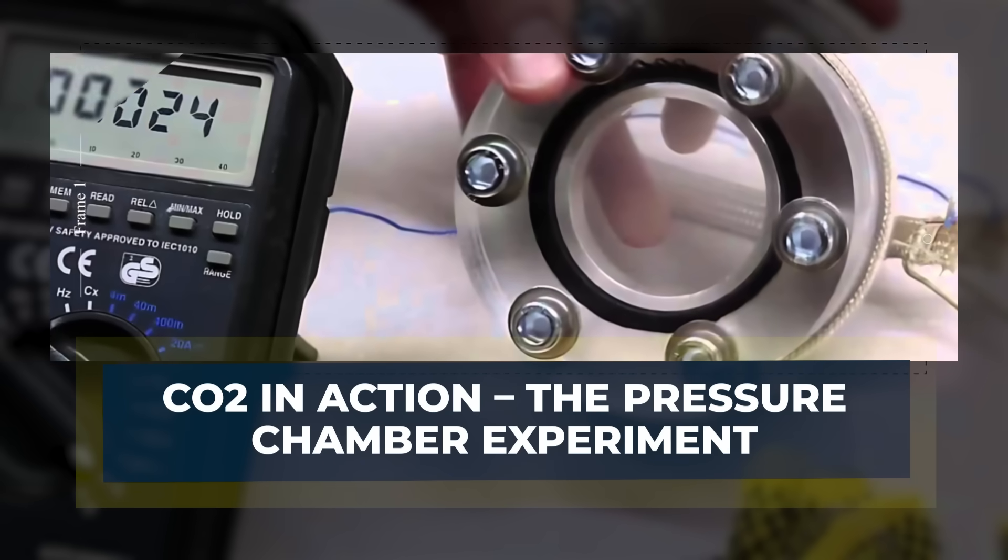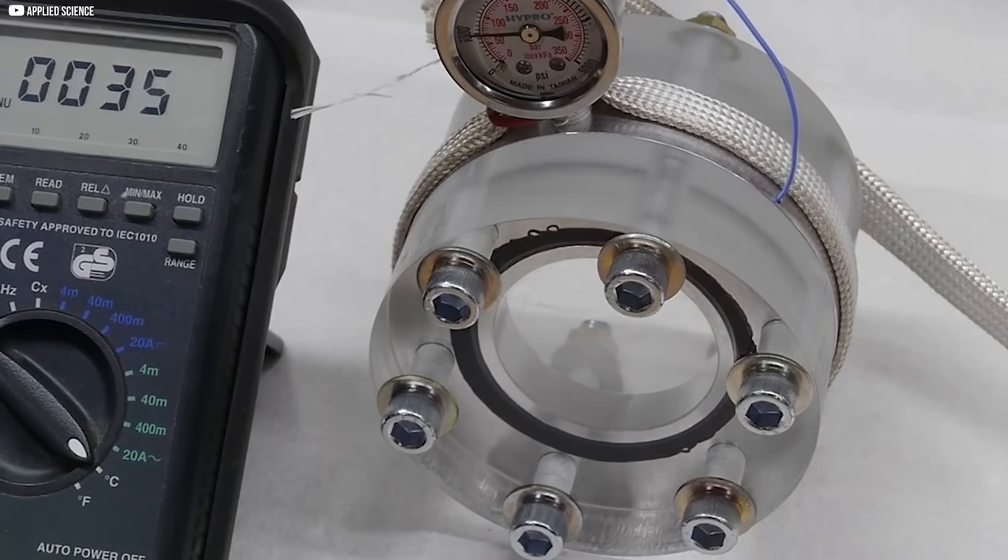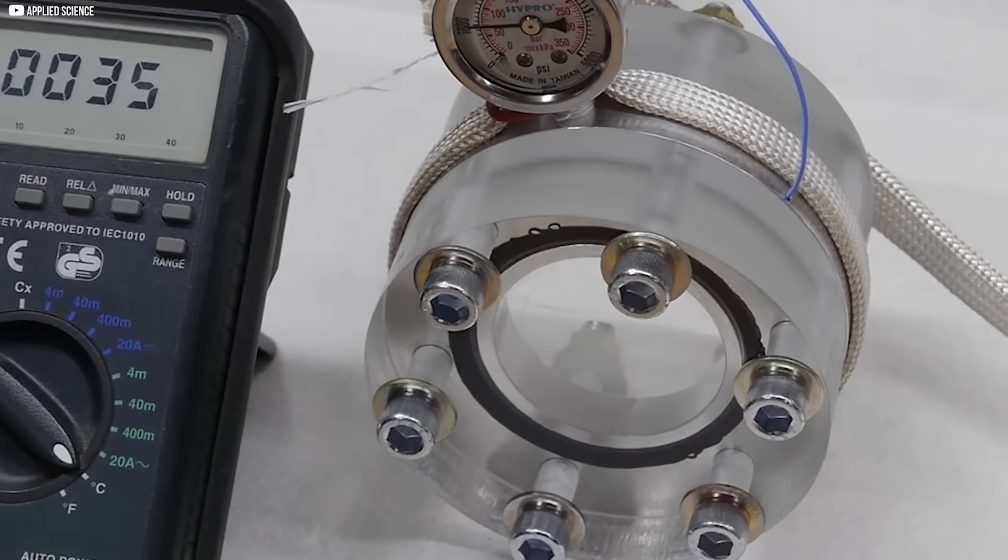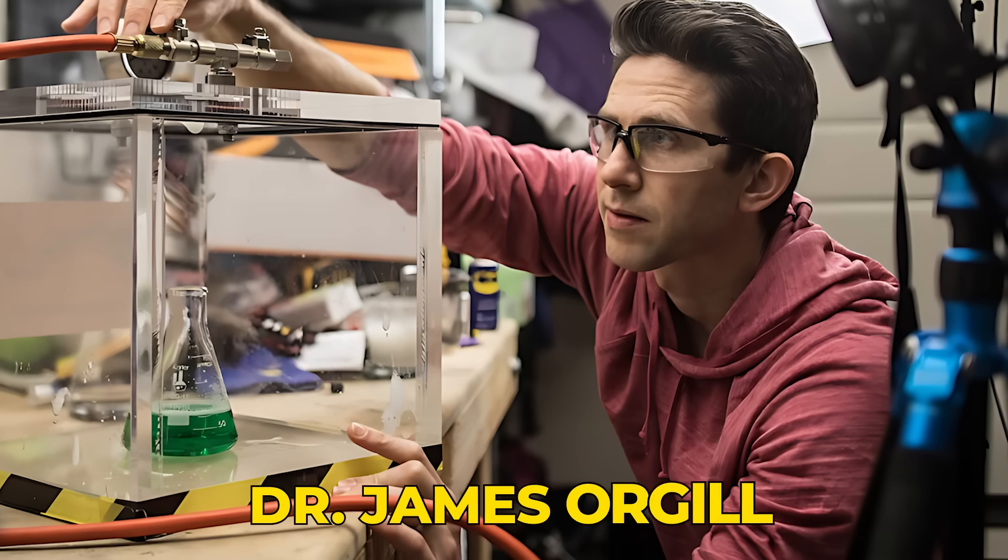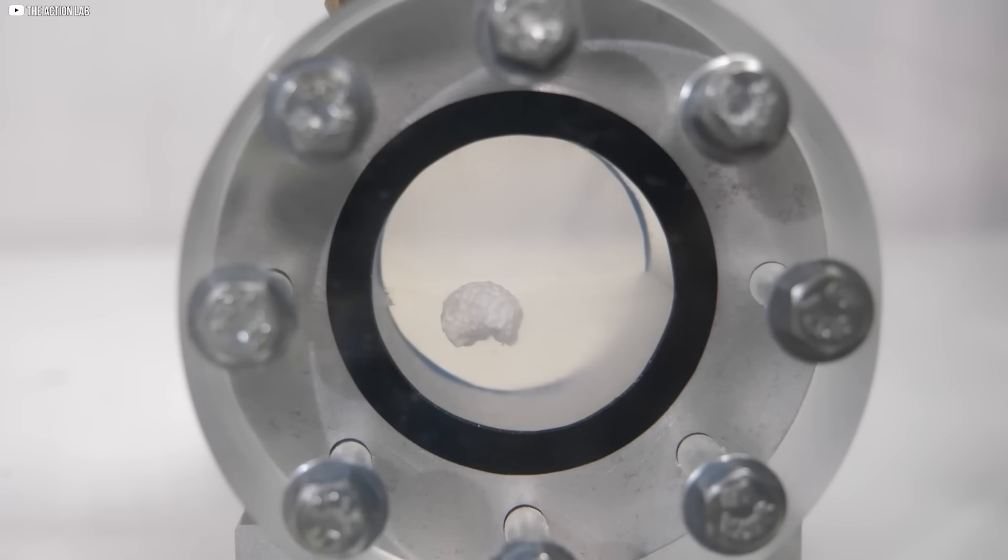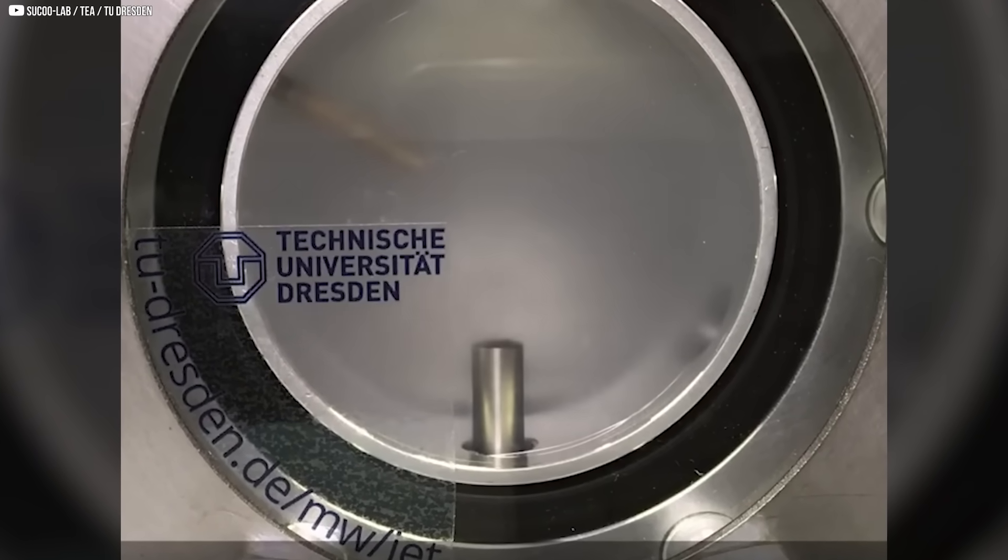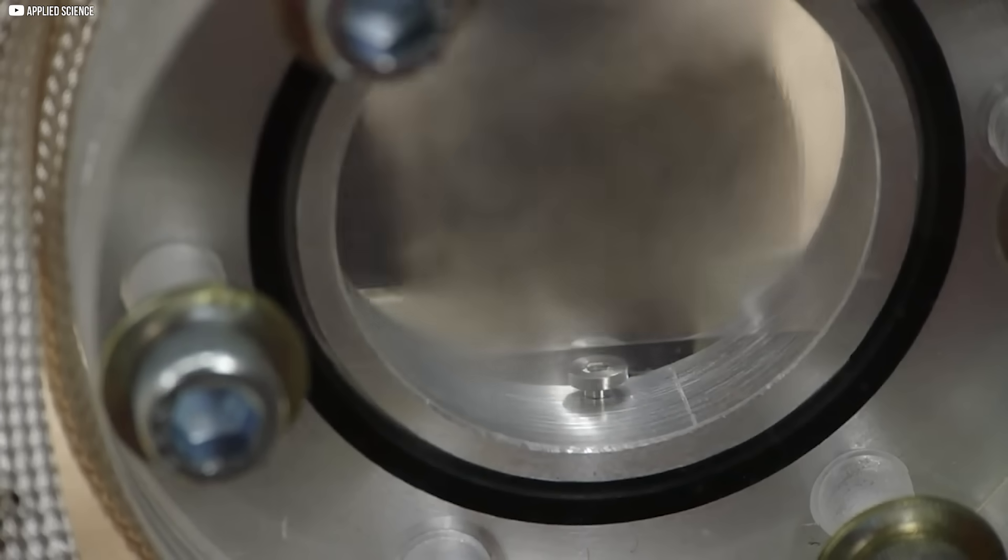CO2 in Action – The Pressure Chamber Experiment. To see supercritical CO2 in action, let's turn to a fascinating demonstration. Dr. James Orgel from the Action Lab YouTube channel offers a clear visual of how CO2 transitions from solid to supercritical fluid. In a high-pressure chamber, solid CO2, or dry ice, is subjected to increasing pressure and temperature.